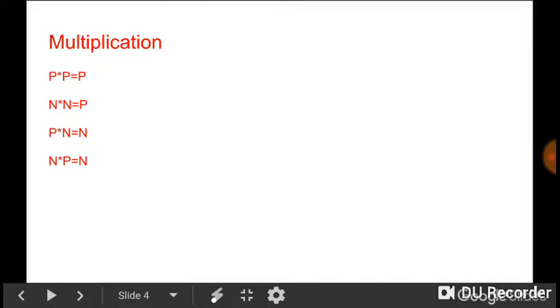Multiplication. For example, positive times positive equals positive. Negative times a negative equals a positive. Positive times a negative is a negative. Positive divided by negative is a negative. Positive divided by positive is a positive. Negative divided by negative is a positive. I mean negative is a positive. Negative divided by positive is negative.